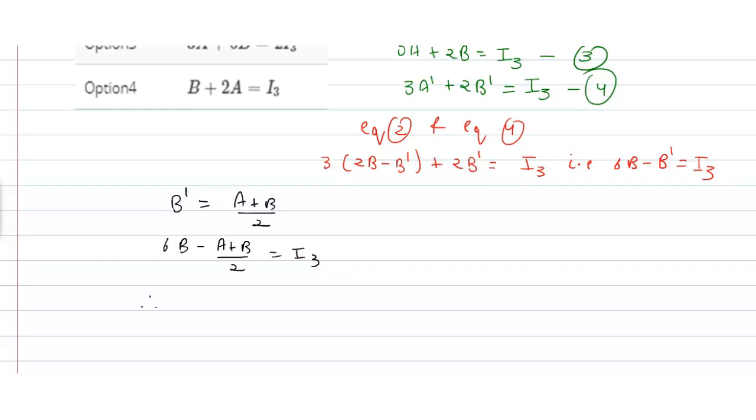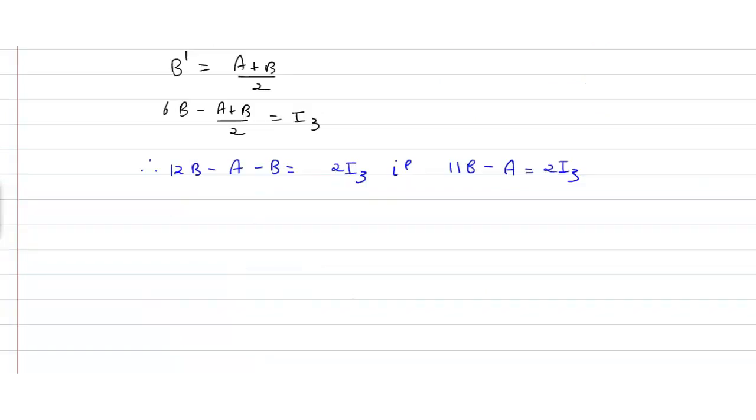Therefore 12B - A - B = 2I₃, that is 11B - A = 2I₃. By putting the value of I₃, we get 11B - A = 6A + 4B.